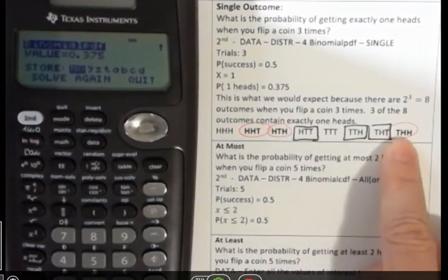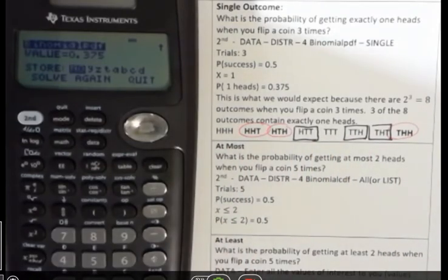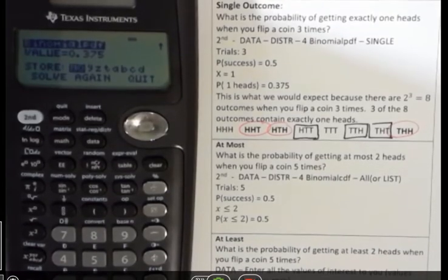But you can see also if I were looking, how many times would I get exactly one tails? There's three of those as well, which would be the same. So asking exactly one heads or exactly one tails is going to give me the same answer.